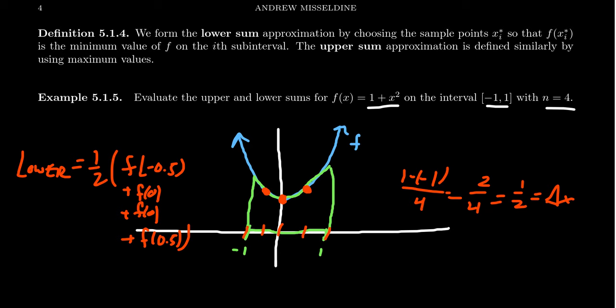But on the other side, you could do the upper sum here, which the upper sum will always be choosing the maximum value that's in the interval. So for the maximum value, we're going to choose this one for the first interval, this one for the second interval, this one for the third interval, and this one for the fourth interval.